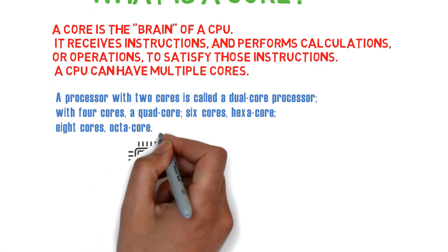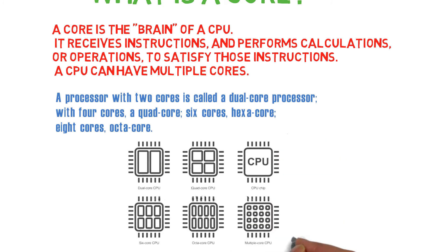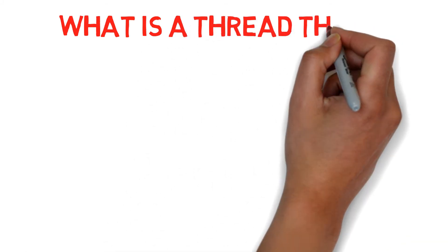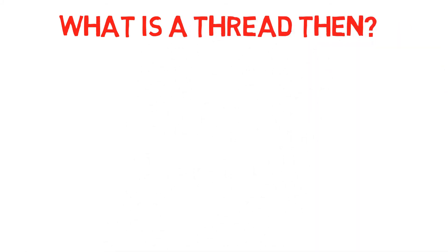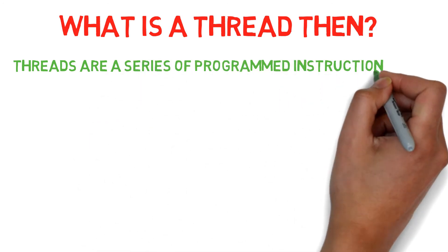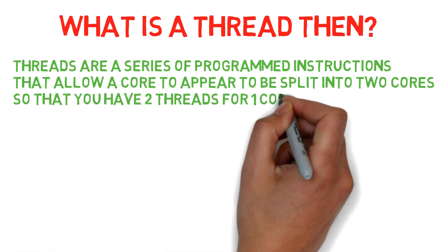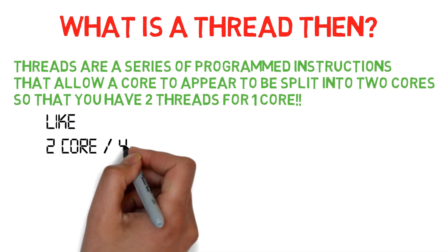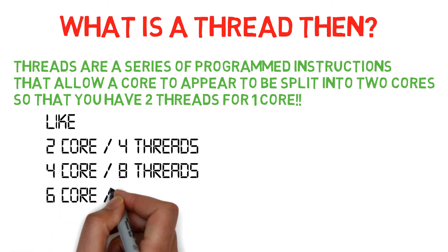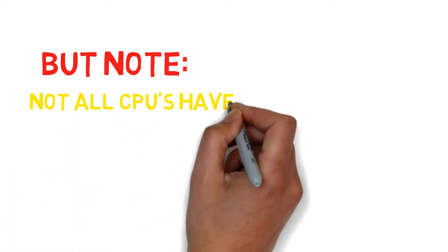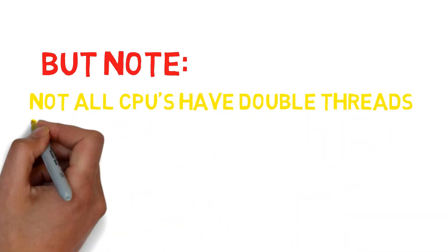Threads are a series of programmed instructions that allow a core to appear to be split into two cores, so you have two threads for each core. For example, dual core has four threads, quad core has eight threads, hexa core has twelve threads, and octa core has sixteen threads. Note that not all CPUs have dual threads nowadays, but it's becoming a trend slowly.